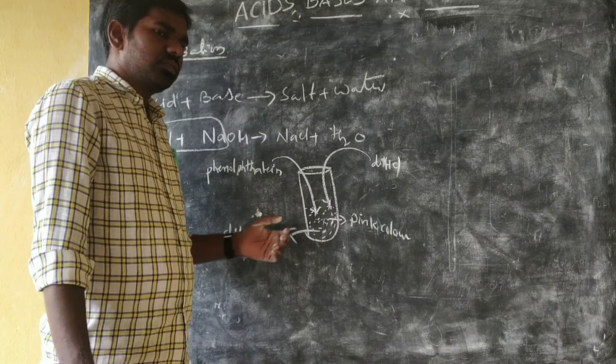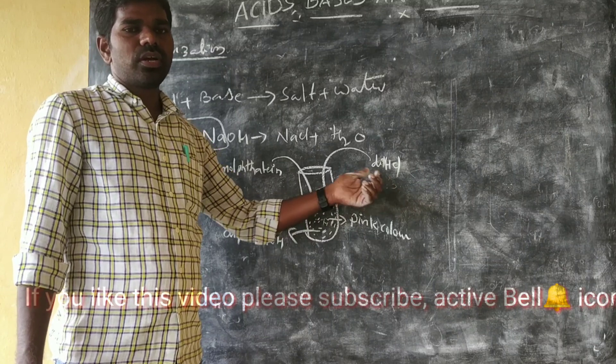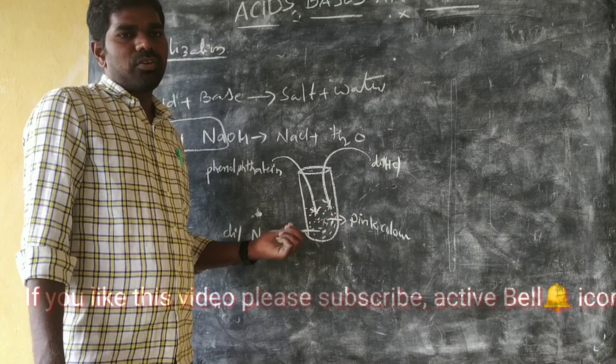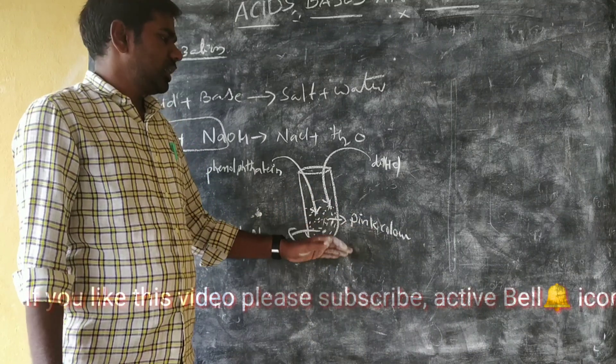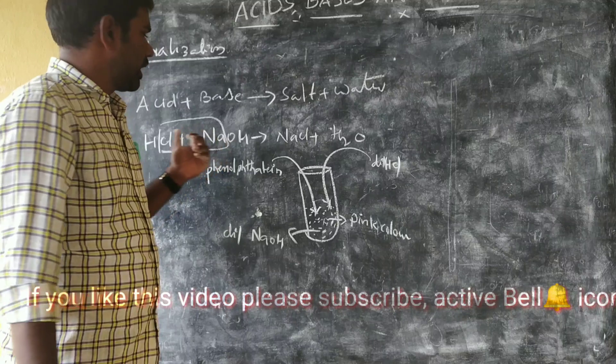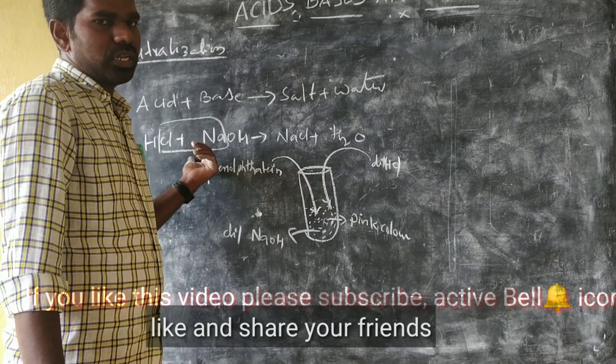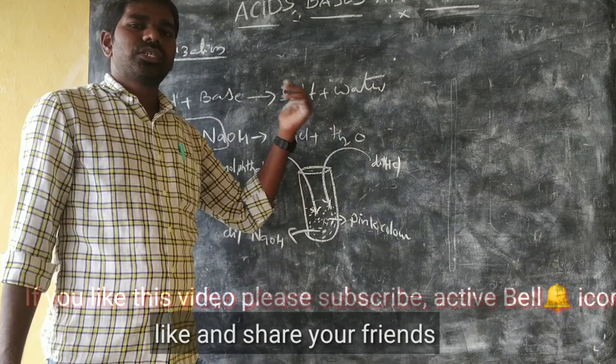NaOH means base, HCl means acid. If you want to change the environment, you can change the environment. So these are neutralization reactions. Acid and base, both are equally combined to give salt plus water. That type of reaction is called a neutralization reaction.